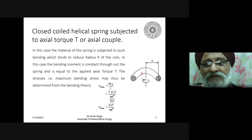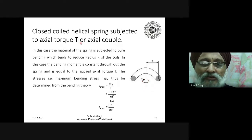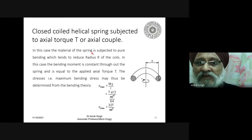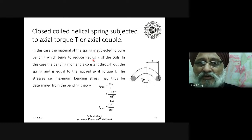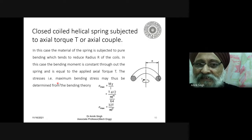Similarly, if the coil is subjected to a couple — not an axial load W but an axial torque T — the material of the spring wire is subjected to pure bending, which tends to reduce the radius of coil R. In this case, the bending moment is constant throughout and is equal to the applied torque T. The maximum bending stress can be given by the bending formula.